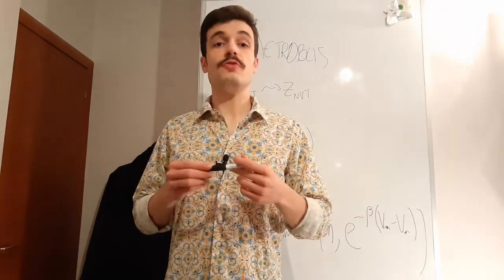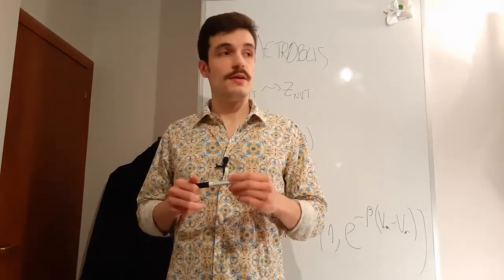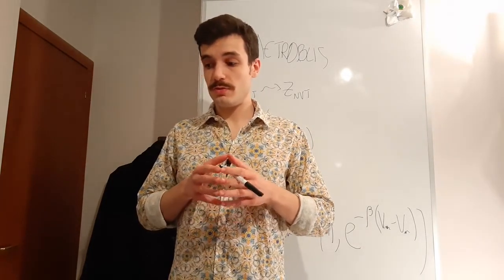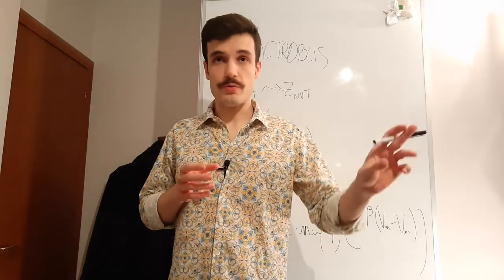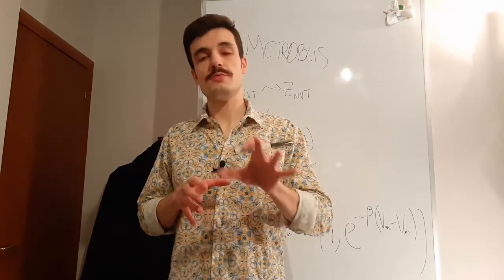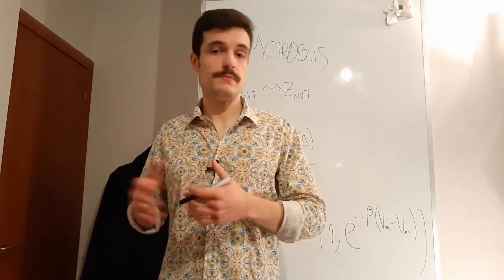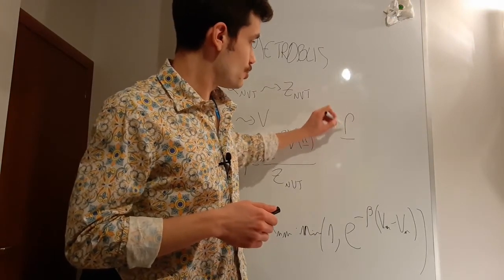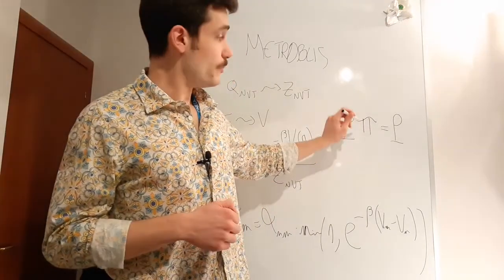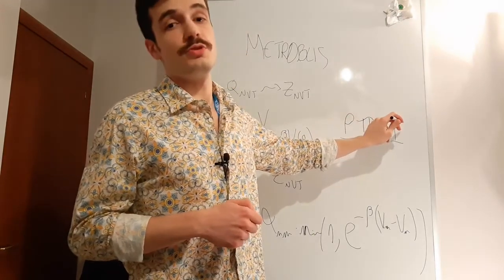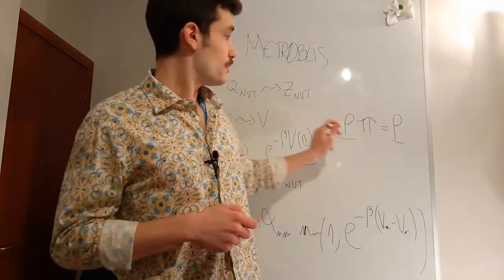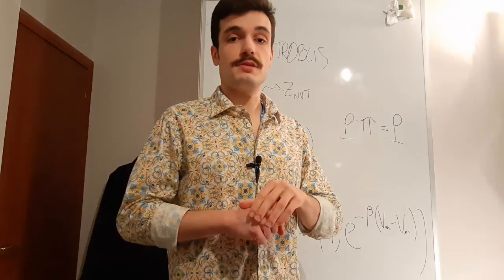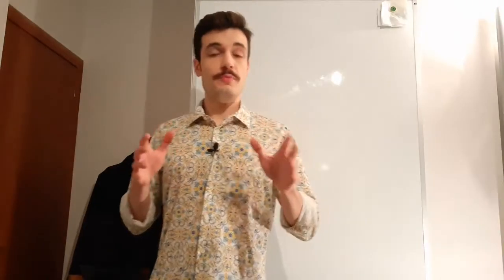And that's a very powerful statement because you can start from everywhere — you don't need to know how the distribution is, you will obtain it. Because when we arrive at the equilibrium distribution, the Markov chain matrix will not change the distribution anymore. The distribution will be an eigenvector of the Markov chain matrix.